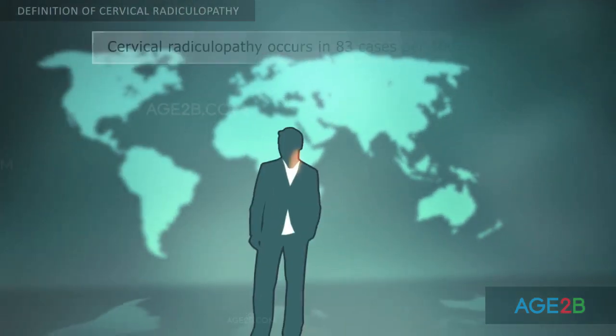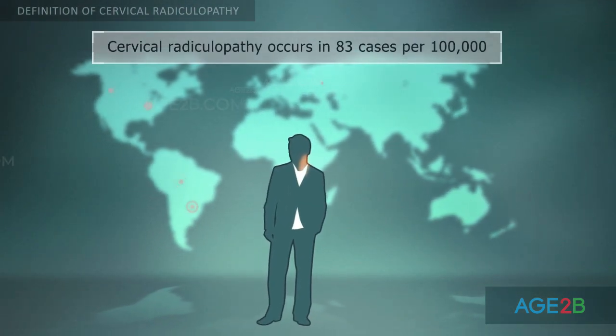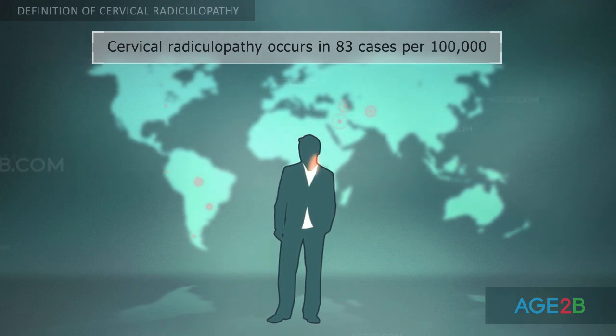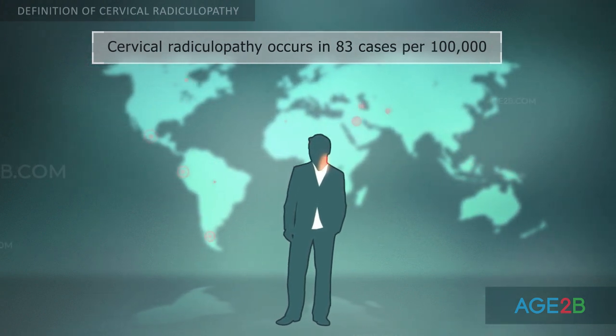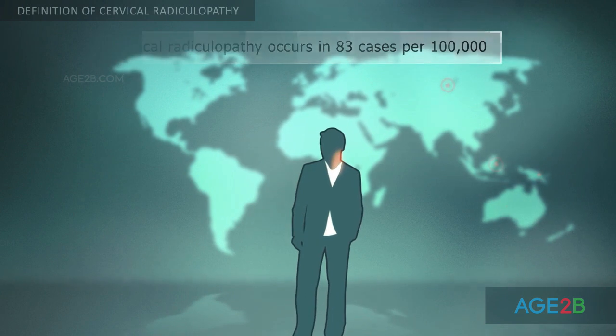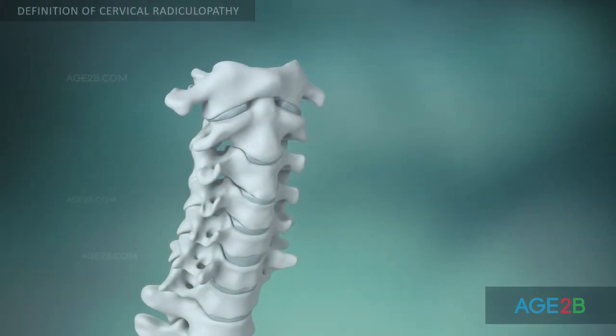Cervical radiculopathy is less prevalent than other types of radiculopathies and occurs in 83 cases per 100,000 people of the world population.